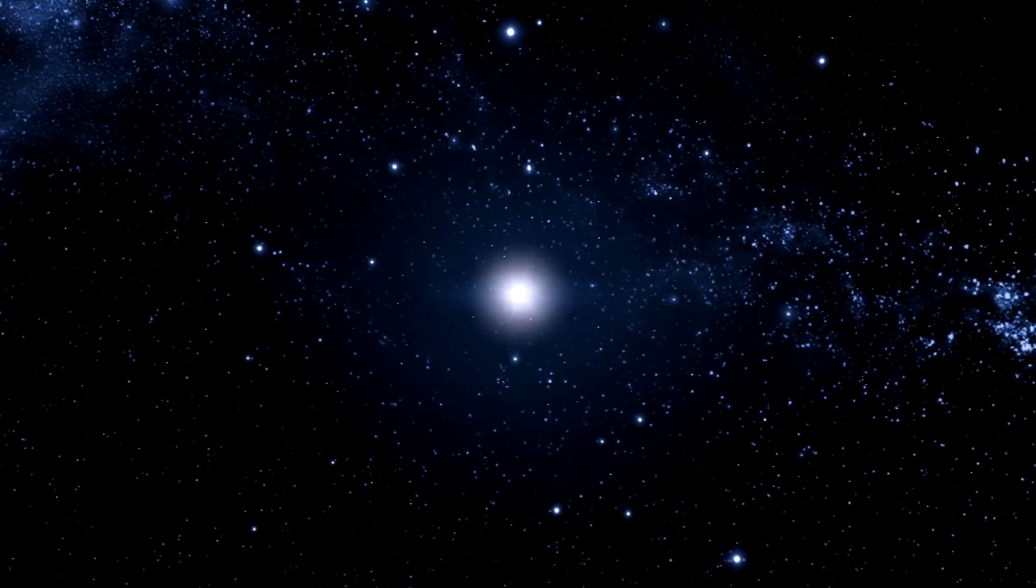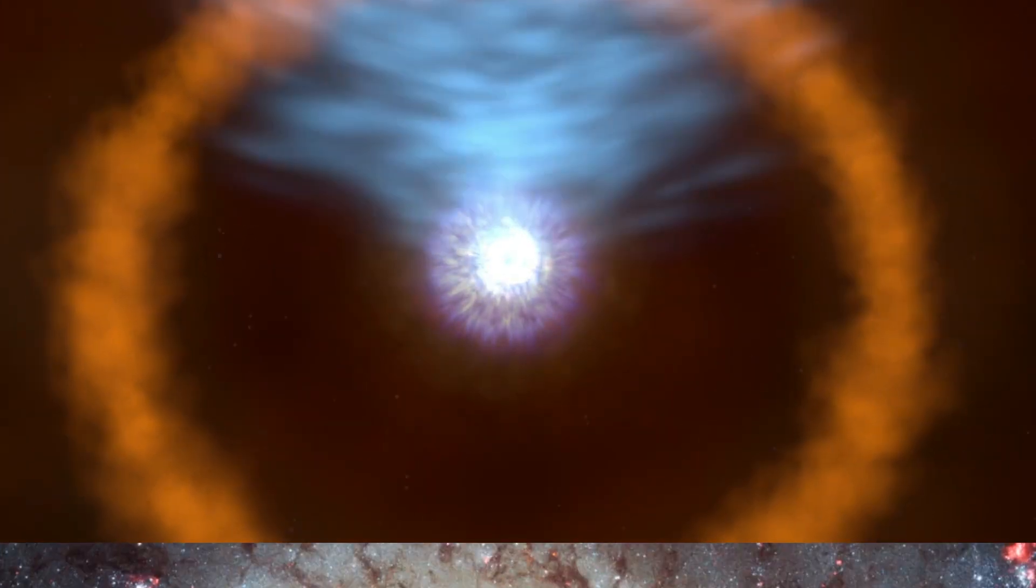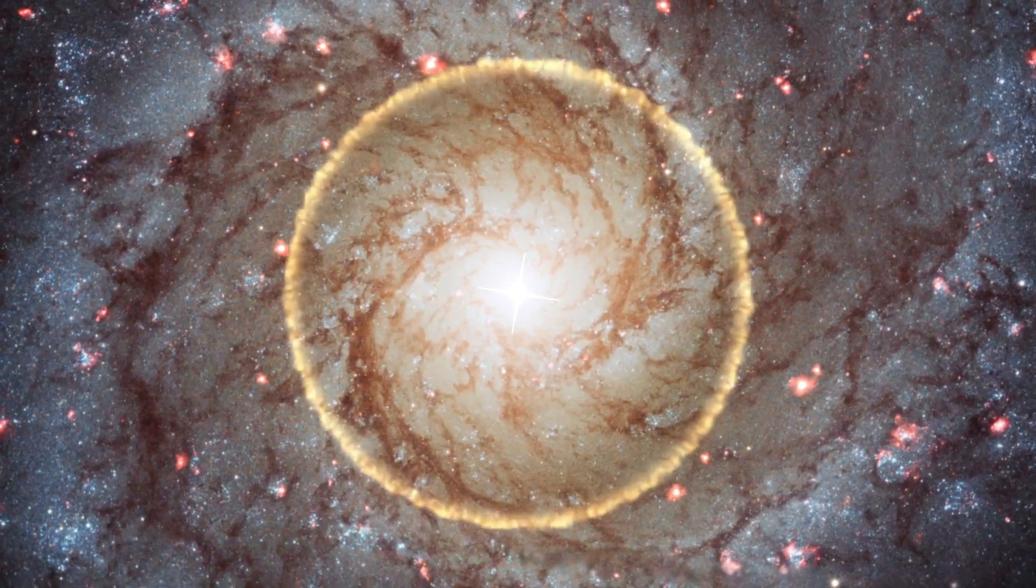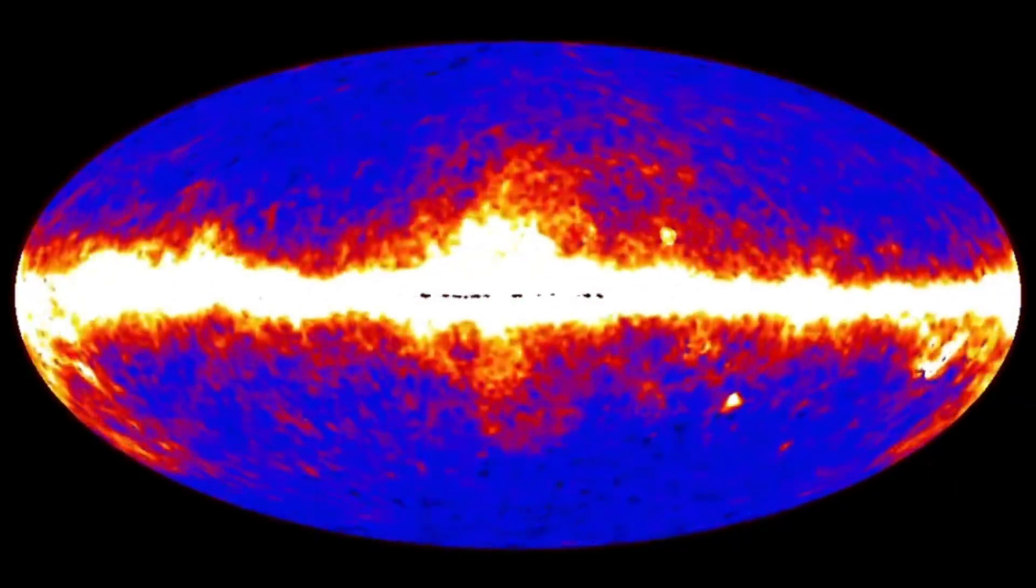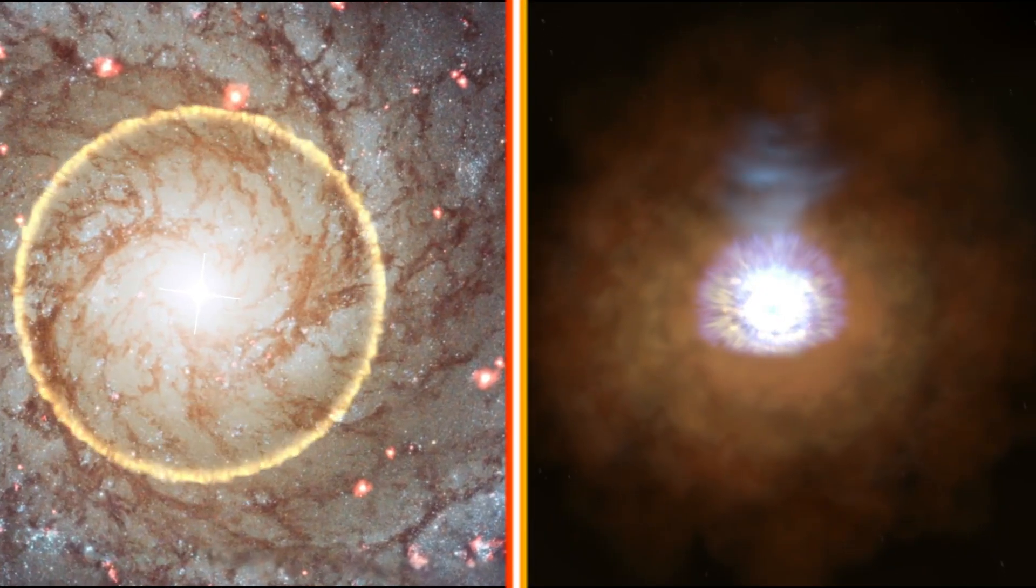While we've seen similar structures in other galaxies, what does the existence of the Fermi and Erosita bubbles tell us about the Milky Way's own evolution? The bubbles themselves are not just passive remnants. They might have played a crucial role in shaping the galaxy we see today. Let's explore how these energetic events could have impacted the galaxy's structure and star formation over time.